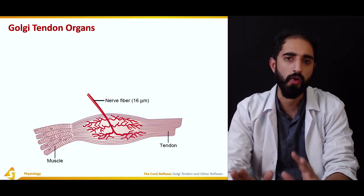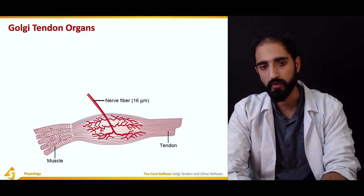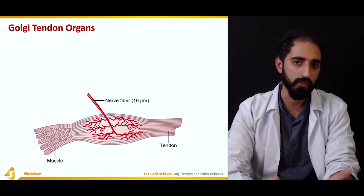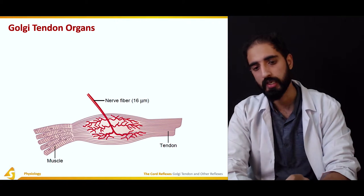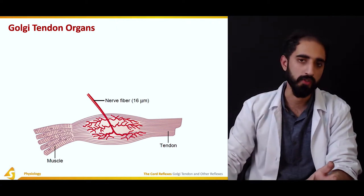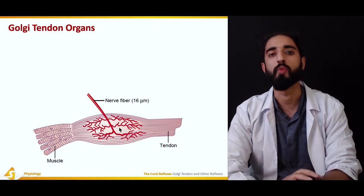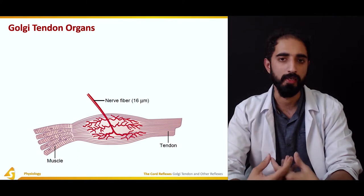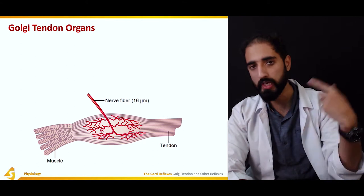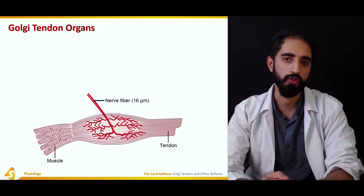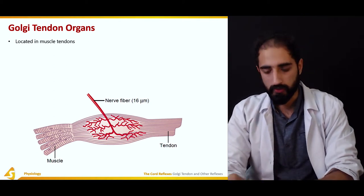What are Golgi tendon organs and how are they different from the muscle spindle? The first point is their location. Golgi tendon organs are not located in the muscles; instead, they are located in the muscle-tendon unit, which is at the attachment side of the muscle, as you can see here. They are not concerned with sensing muscle length but with sensing muscle tone.